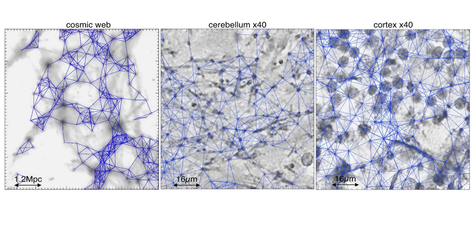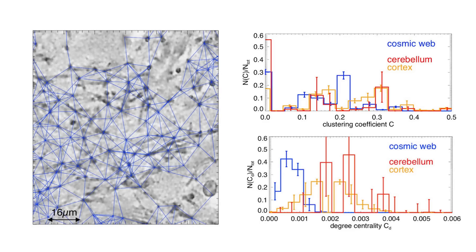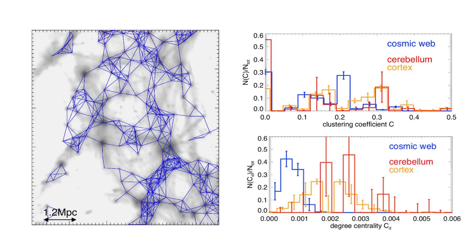The researchers who published this research investigated the nodal points of the neuronal network of the brain compared with those of the cosmic web. Their analysis showed 4 to 5 axons extending from each nodal point in a nerve cell, and around 4 galaxies connected to each nodal point in the cosmic web.